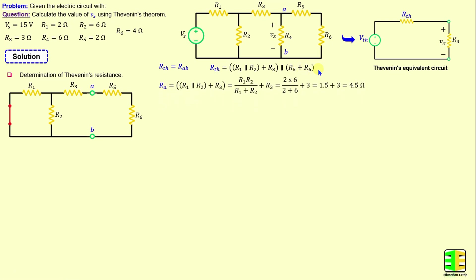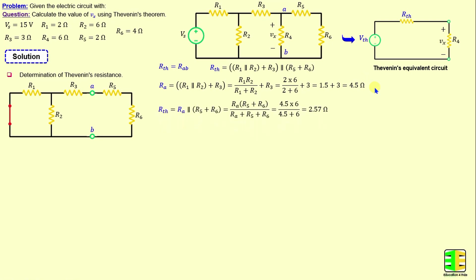I define Ra as the parallel combination of R1 and R2 connected in series with R3. That means Ra = (R1 × R2) / (R1 + R2) + R3. Substituting numerical values gives Ra = 4.5 ohms. Then Rth equals the parallel combination of Ra and R5, connected in series with R6: Rth = (Ra × (R5 + R6)) / (Ra + R5 + R6), which gives Rth = 2.57 ohms.